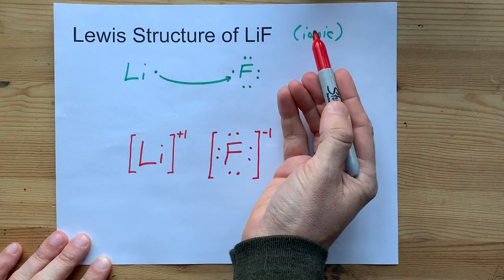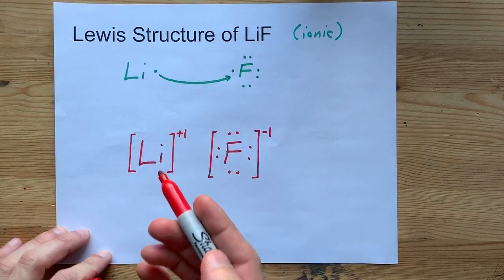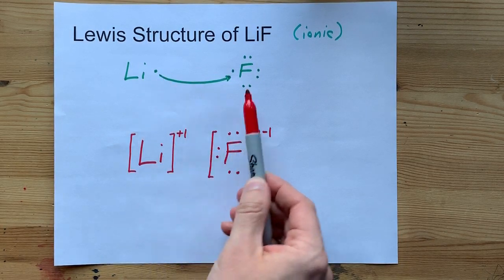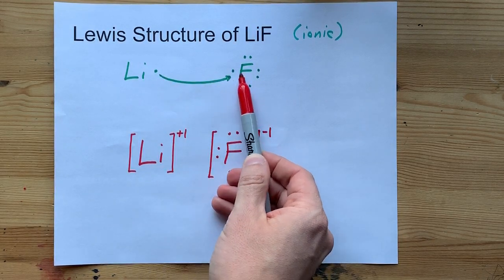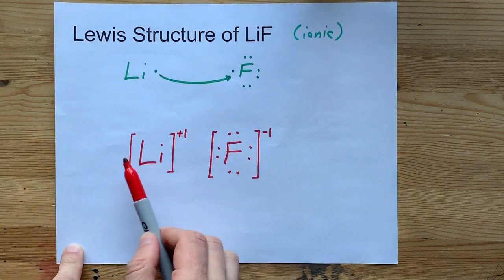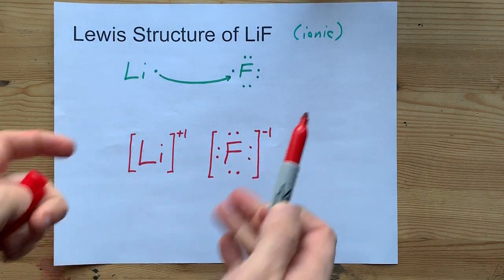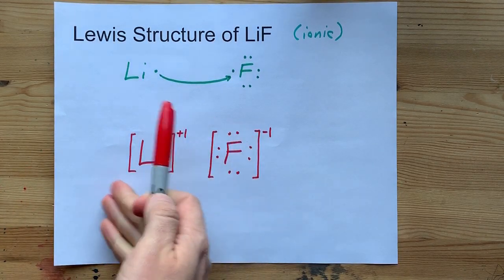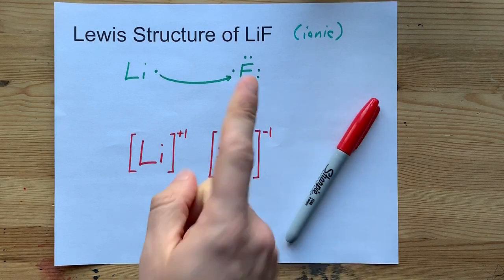Get it? Ions make ionic compounds. Yeah. Because lithium only had one to give away and fluorine only needed one to complete its set of eight, or octet, it's just one of each and you're done. This is the Lewis structure for lithium fluoride. Thanks for being with me and best of luck.